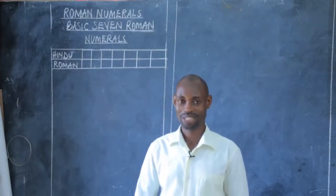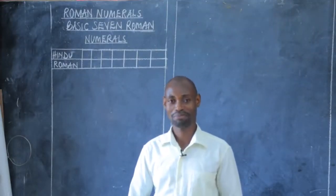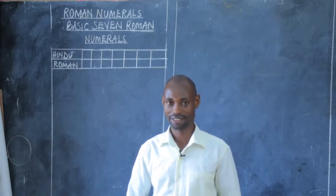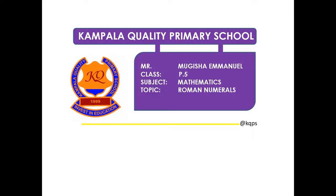My dear P5 learners, welcome to this online program. My name is Mr. Mugisha Emanuel. In our previous lesson, I taught you about rounding off. We rounded off to the nearest tens, hundreds, and went as far as rounding off to the nearest thousands. So today, I'm not going to repeat what I did last week. You will allow me today to take you through a new lesson, and that is Roman numerals.